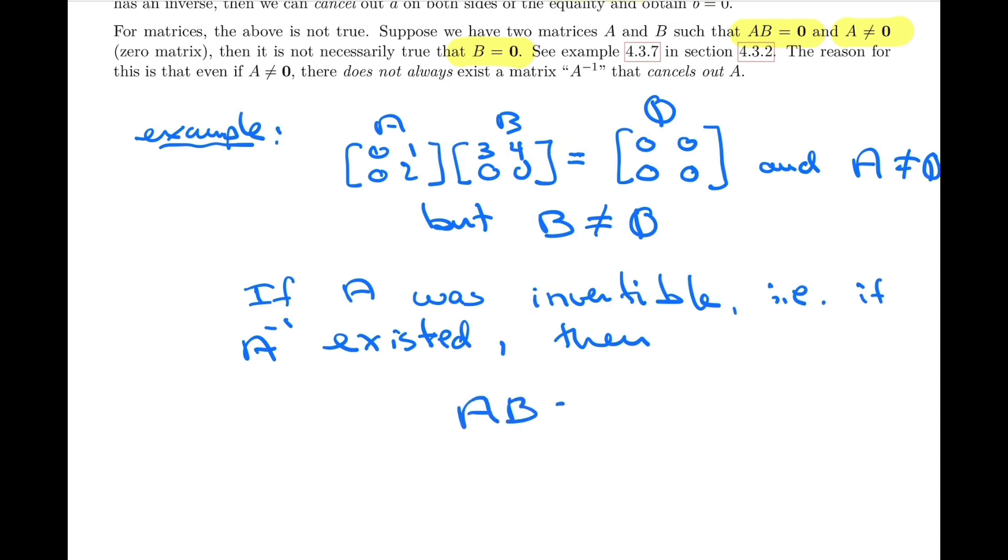Well, AB equals zero. If A inverse did exist, we could multiply both sides by A inverse, just like we did with real numbers earlier. And in this case, A inverse times A would be the identity matrix rather than the number one. And that, of course, would simply give us B equals zero. So as you can see, in this case, if A was invertible, then we would come to the conclusion that B has to be zero.